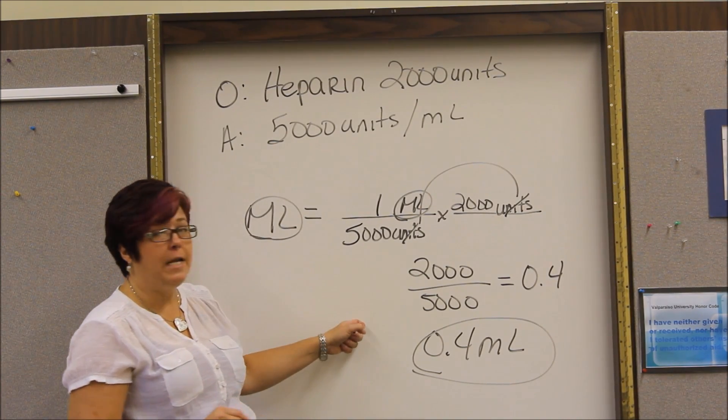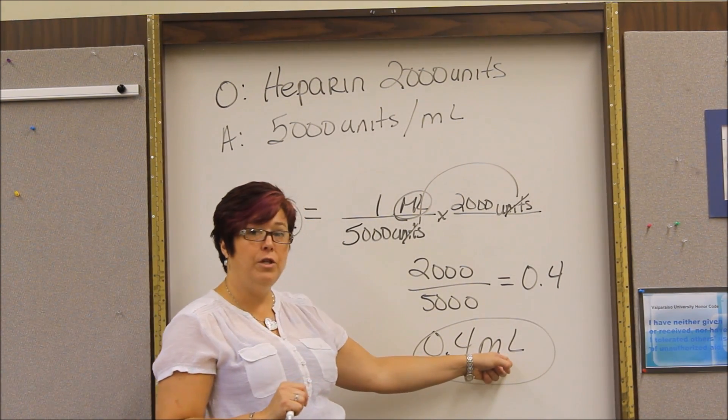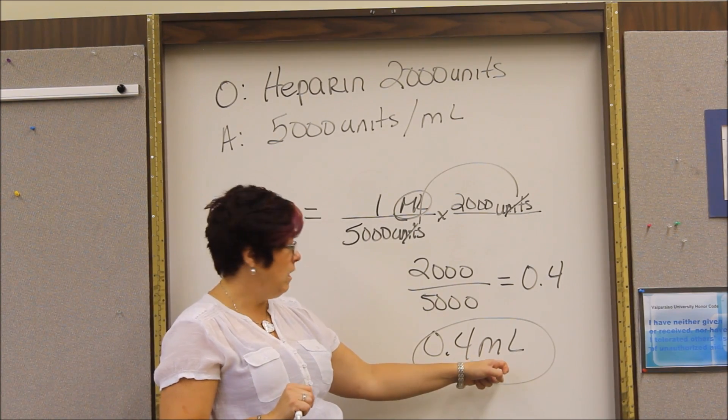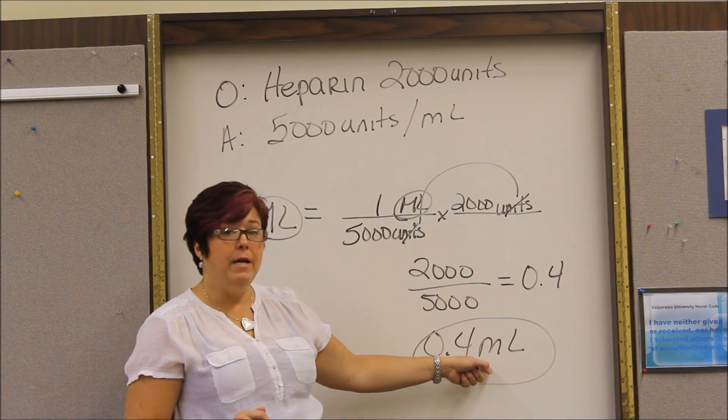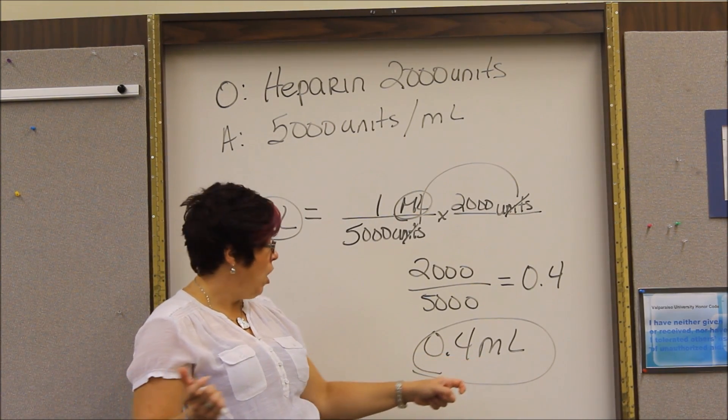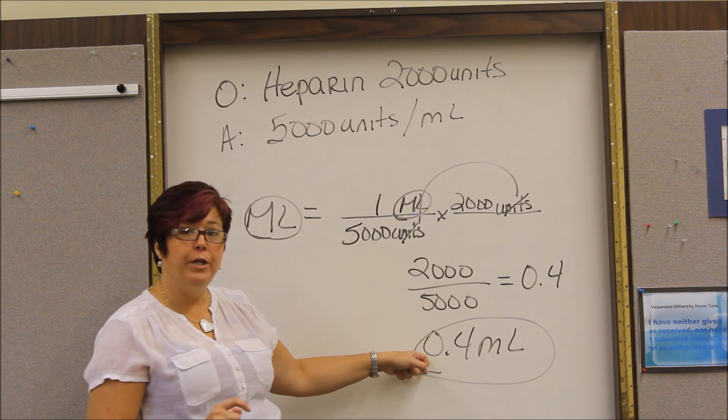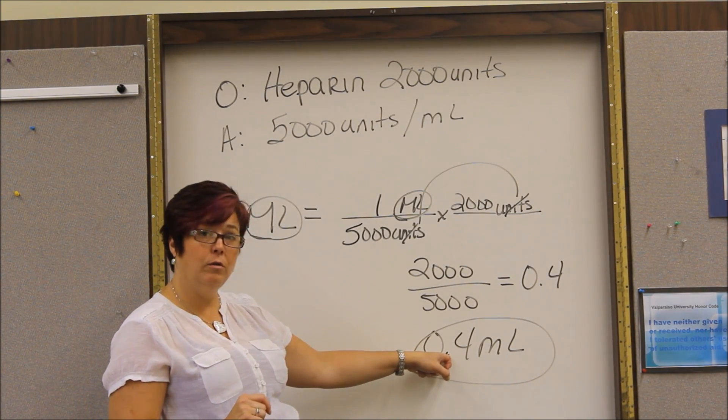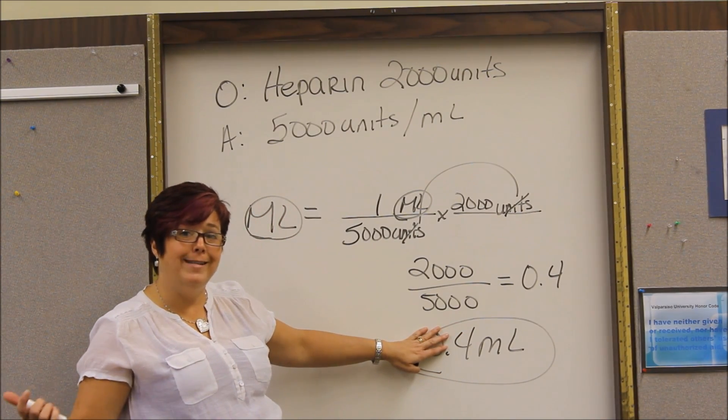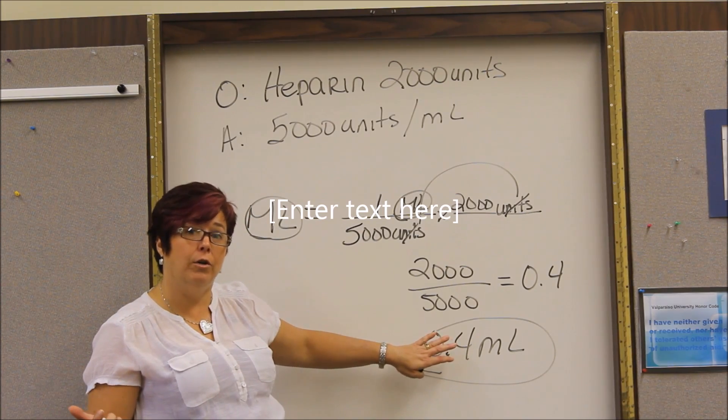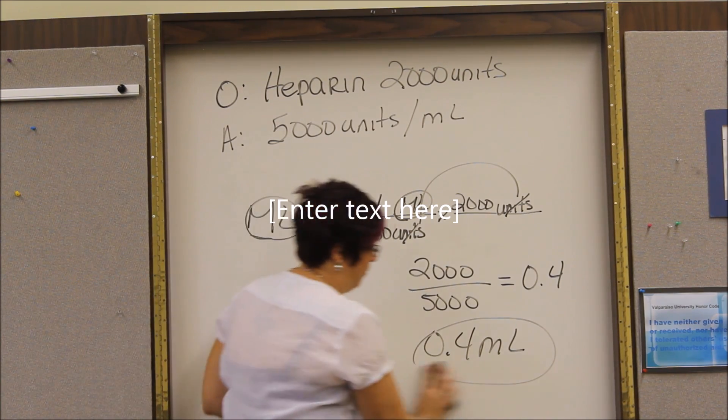It's also important, a little tidbit for your test. When you do math, always make sure that you include the unit of measurement with your answer. If you do not and you only put 0.4, your instructor may count that wrong. Also, if it's a decimal .4, always make sure that you put a zero before the decimal. If you don't put the zero, then sometimes that decimal does not get noticed and they may think that you are going to draw up 4 milliliters. So that's just another basic problem.